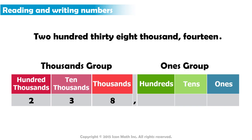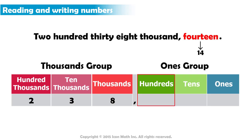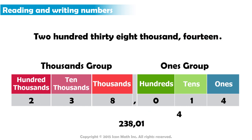We continue reading the number. We have 14. Fourteen is a two-digit number, so we don't have a hundreds digit. So we write zero in the hundreds place, one in the tens place, and four in the ones place. And that is how the number is written in base ten numerals.